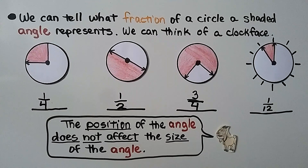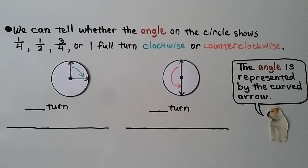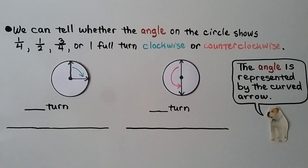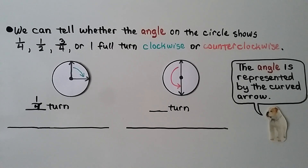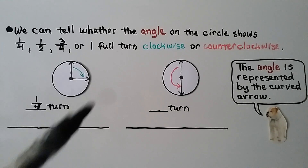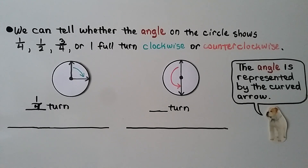The position of the angle does not affect the size of the angle. We can tell whether the angle on the circle shows one-fourth, one-half, three-fourths, or one full turn clockwise or counterclockwise, and the angle is represented by the curved arrow. So what fraction of a turn do you think that is? If you said one-fourth, you're correct. And did it turn clockwise or counterclockwise? Look at the direction the arrow is going — it's going around this way. If you said clockwise, you're correct.